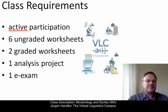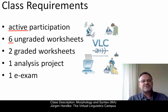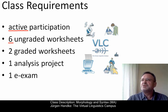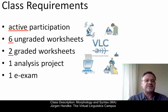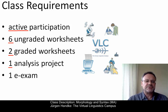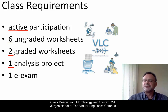Secondly, you have to do at least six ungraded worksheets. Since these ungraded worksheets constitute the basis for assessing whether you've grasped the online content, we recommend that you do all ungraded worksheets. Two of these worksheets, however, are graded. They have to be done as well, and they are awarded with 20% of the overall grade. One analysis project has to be done too, where you have to analyze morphological data, and it counts 40% of the overall grade.